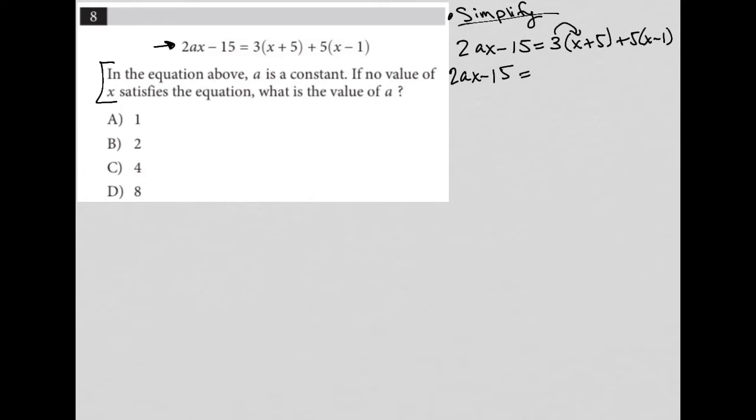I can distribute the three across here, so I get 3X plus 15. I can distribute the five across here, so I get plus 5X minus 5. I have like terms, 3X and 5X, which gives me 8X. Then I have 15 minus 5, which gives me positive 10.